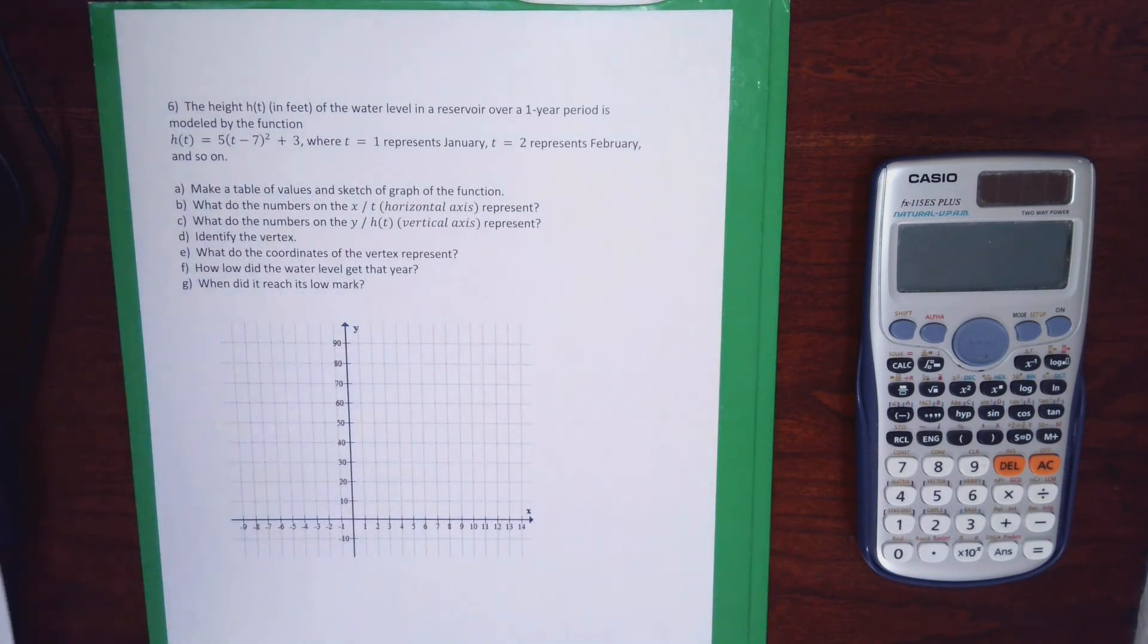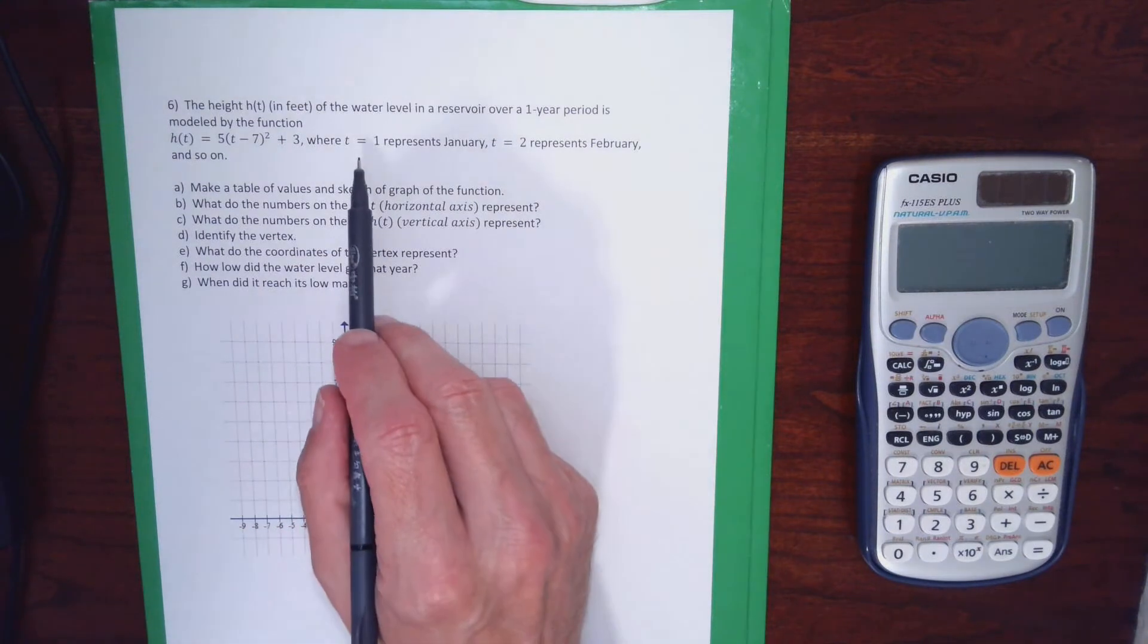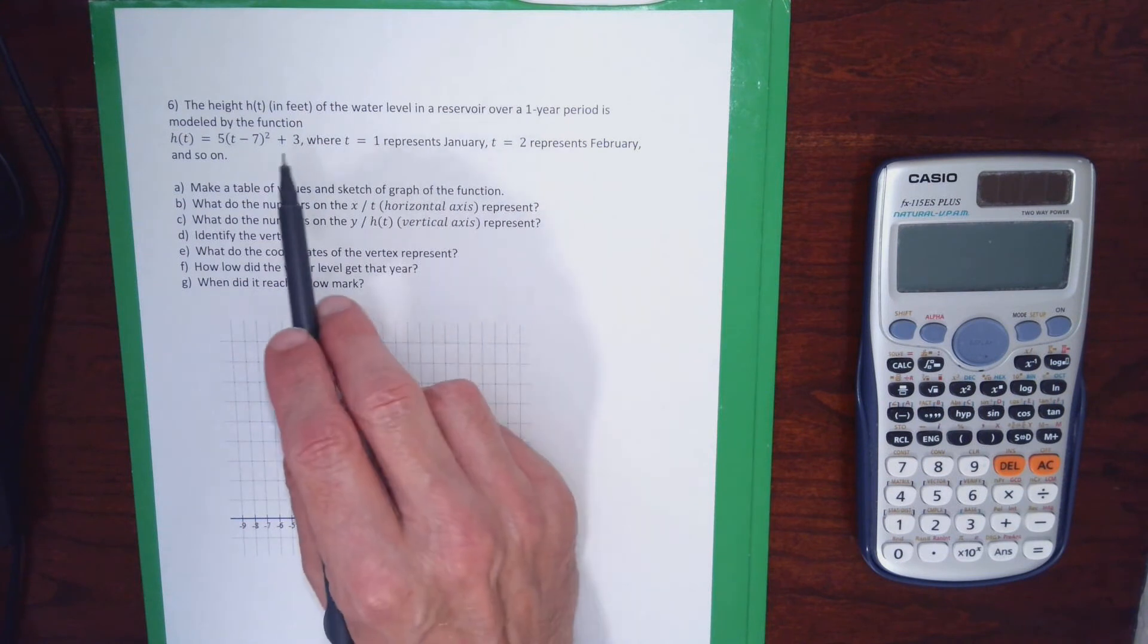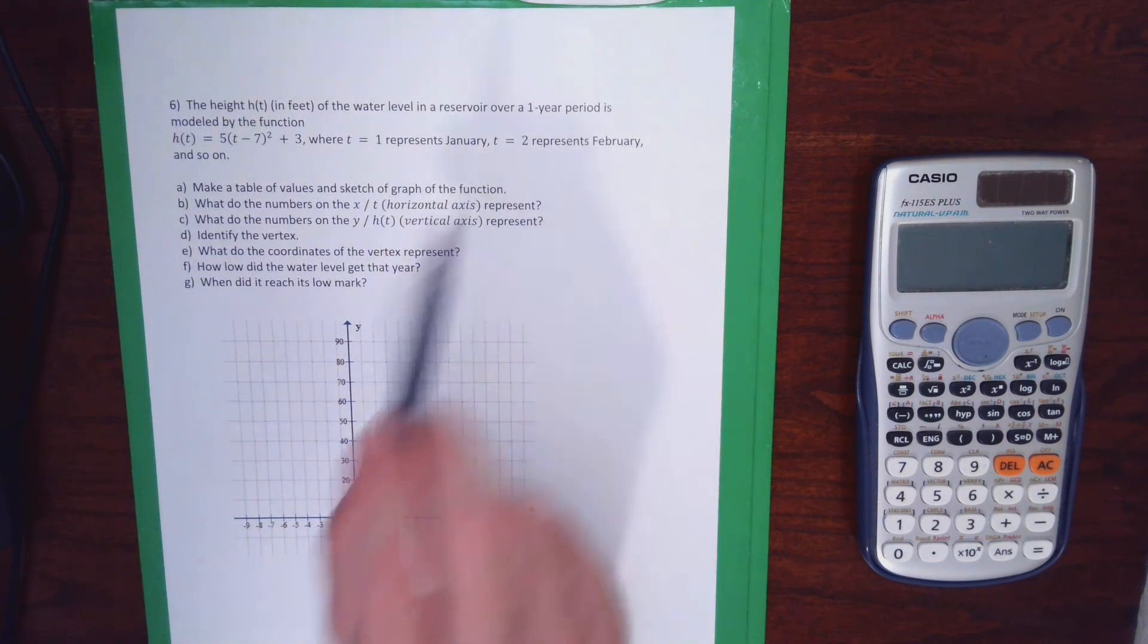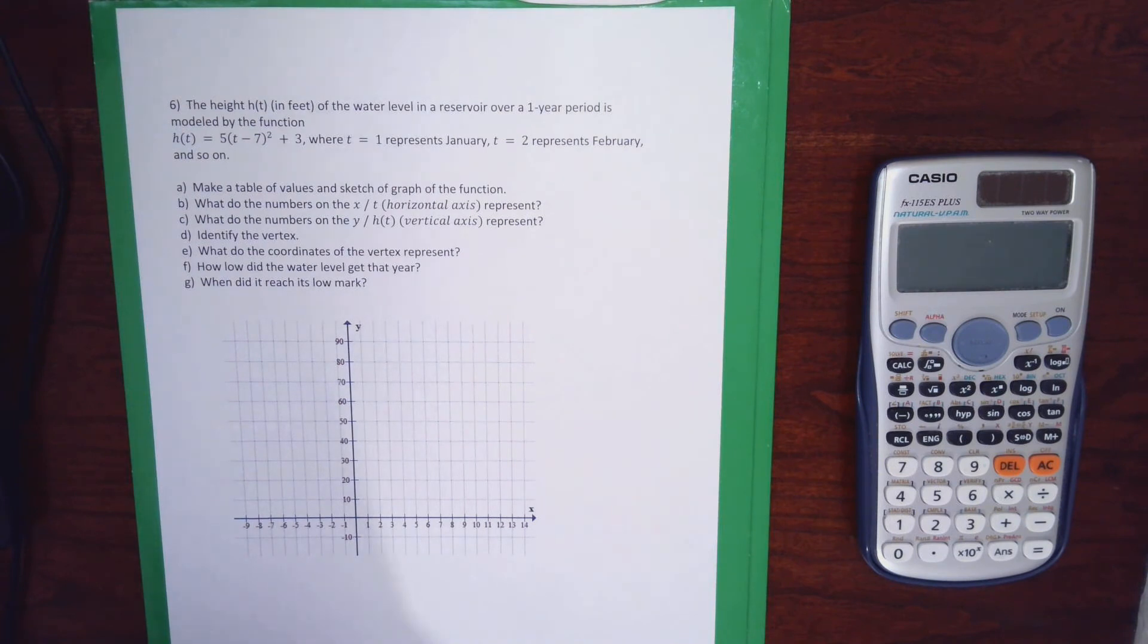So Problem 6 gives me a function and it says H of T is the height in feet, just like the last problem I did, the height of an object. This is the height or depth of water in a reservoir over a one-year period. And in the last problem we did, the T stood for time in seconds. In this problem, the T represents the month of the year. If I plug in 1 to this function, it's going to give me how deep the water was in the reservoir during the month of January, maybe the average depth during that month. If I plug in 2, it will give me the average depth during February. If I plug in 12, it will give me the depth of that reservoir during the month of December.